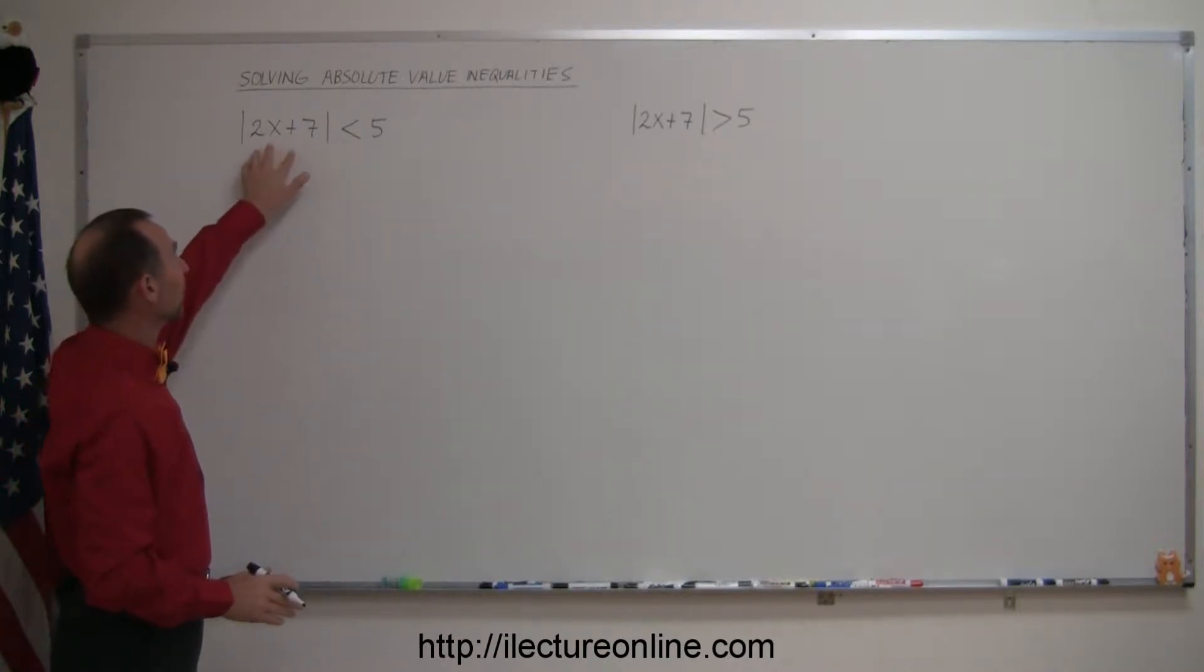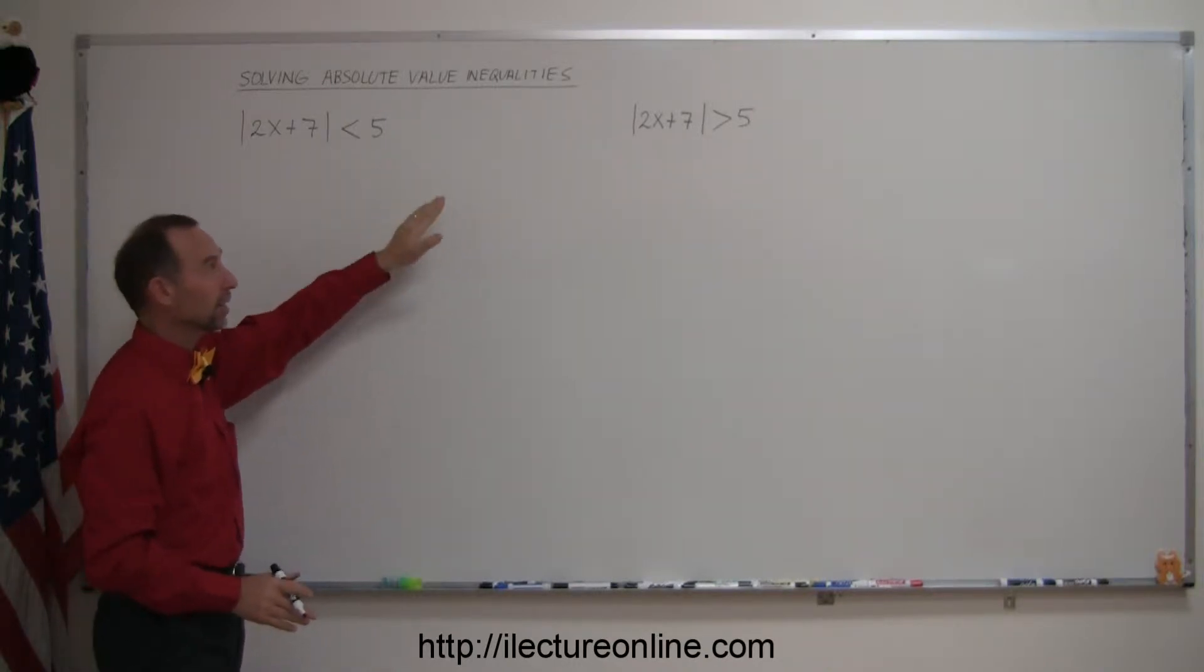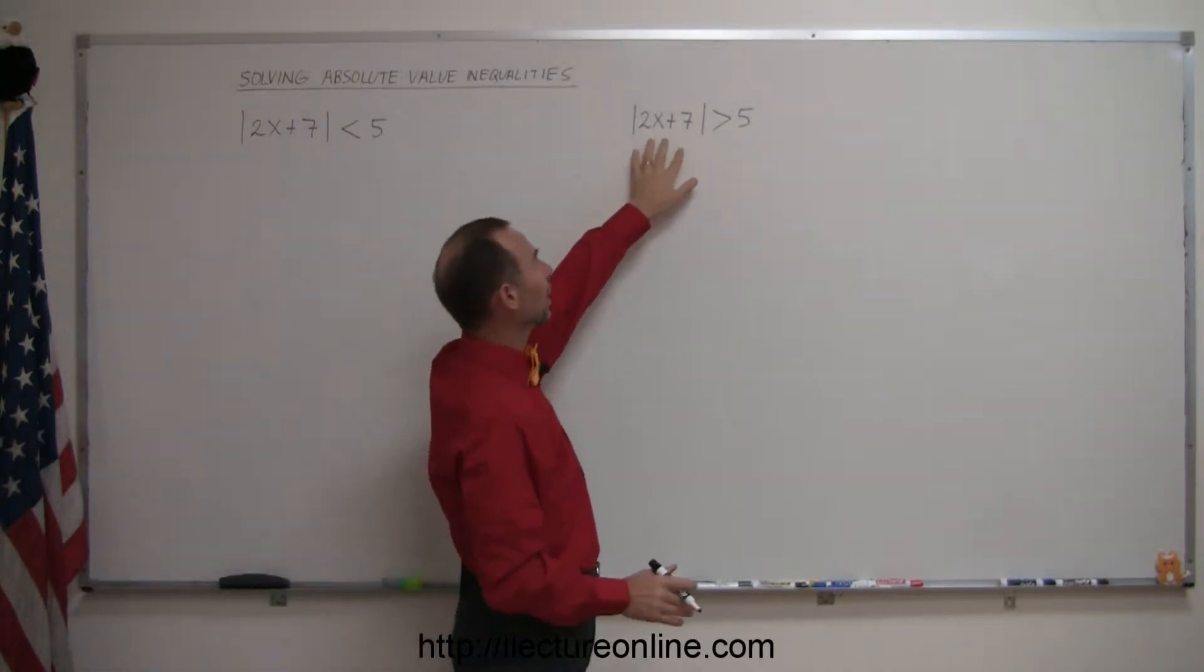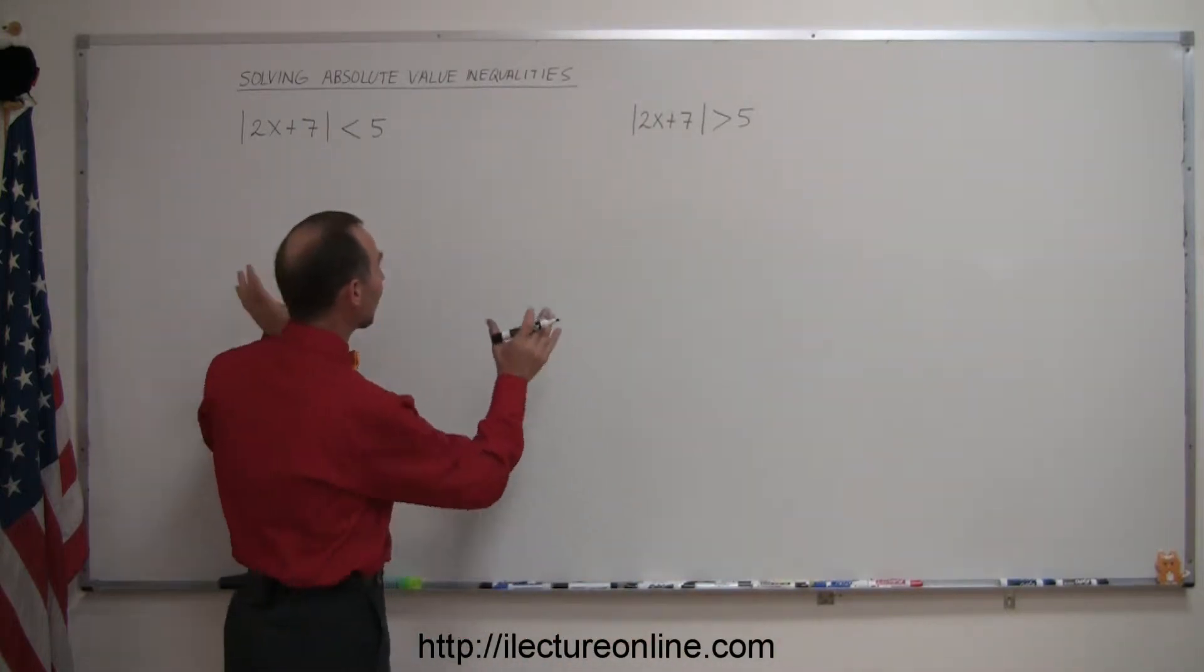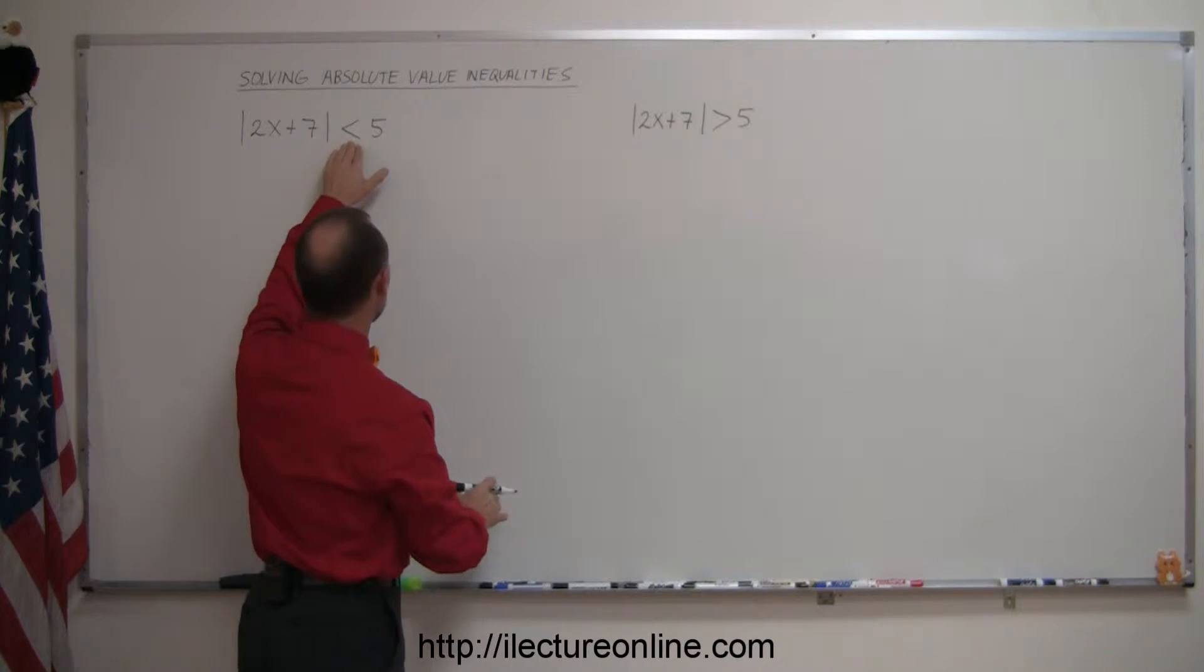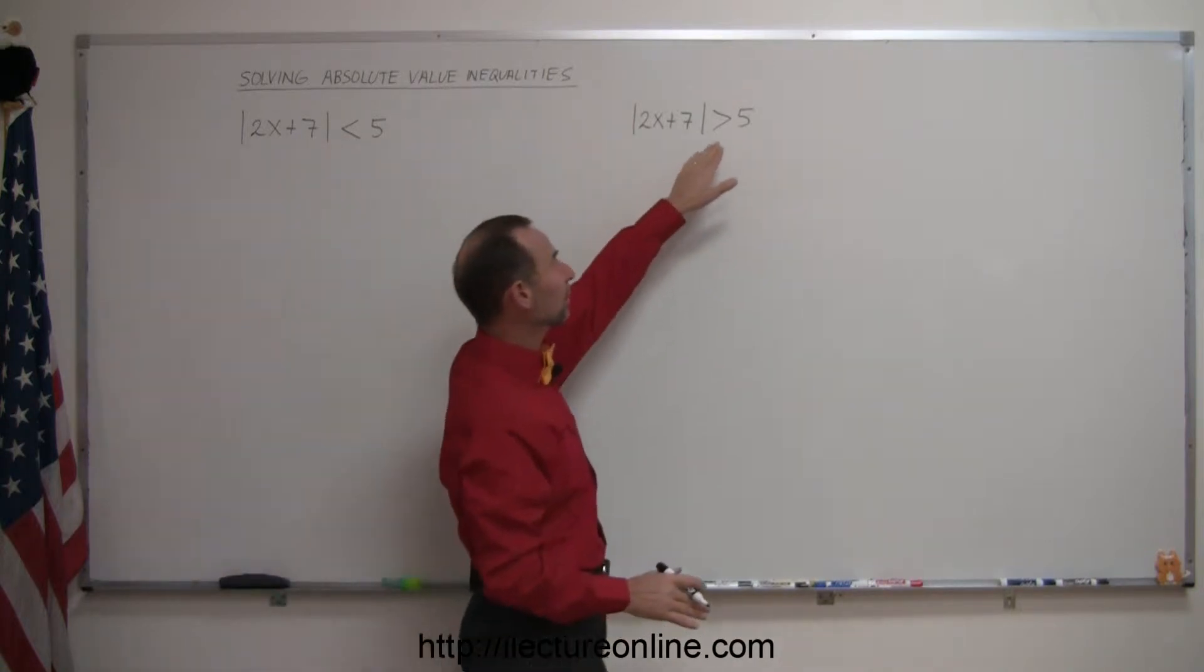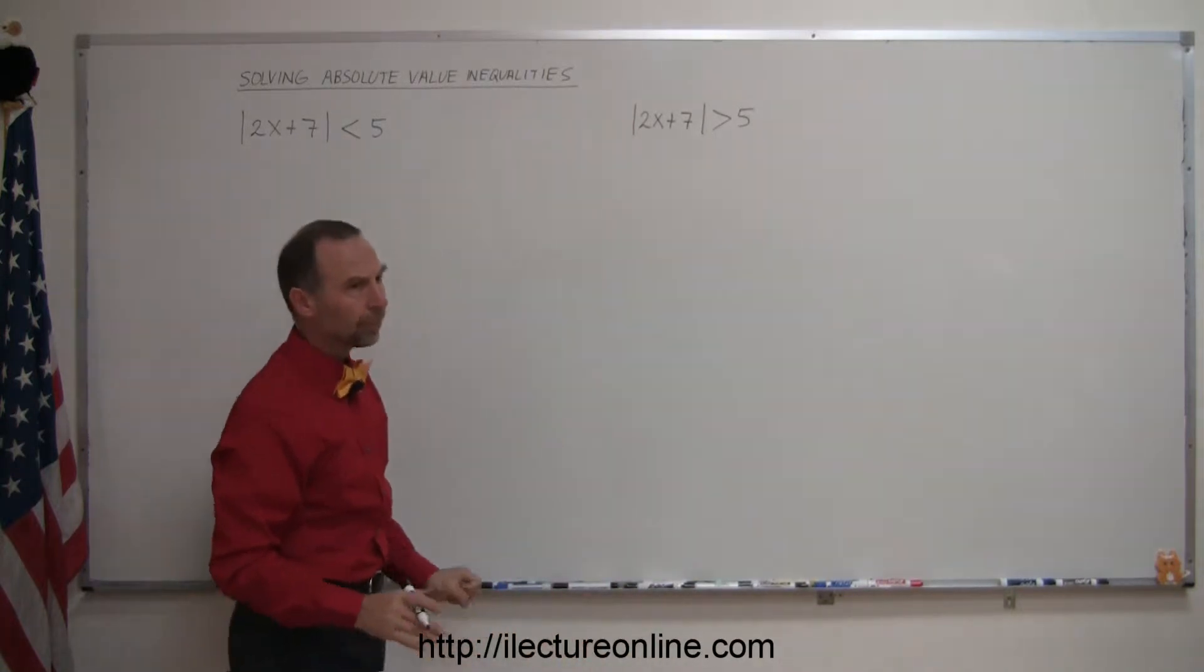In one case, the absolute value symbol, whatever is inside of it, is smaller than some number. In the other case, whatever is within the absolute value symbol is larger than some number. And you can see that I've used the exact same expression; the only difference is that here it's less than, and here it's more than.